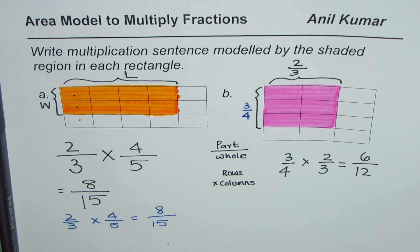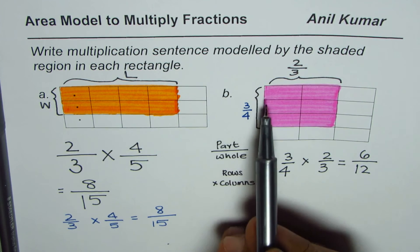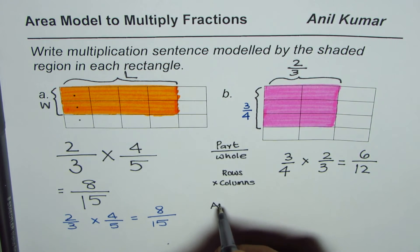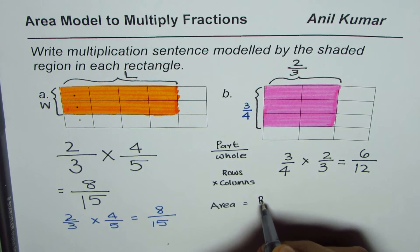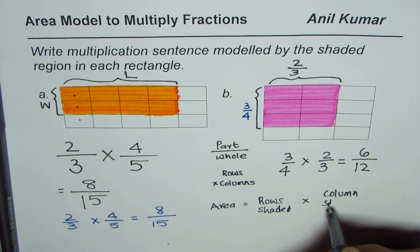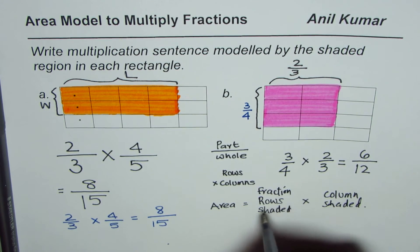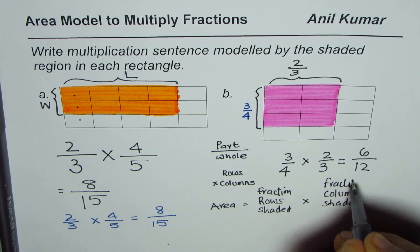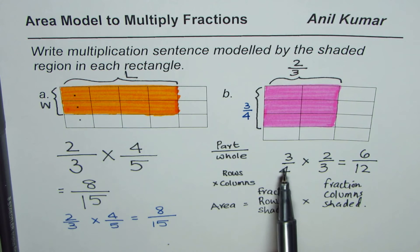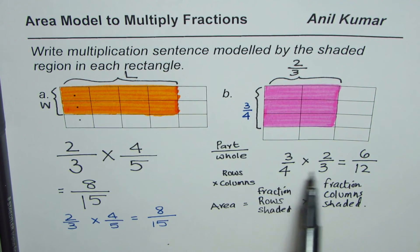So 6/12 is the multiplication sentence modeling the shaded region of the second rectangle. To summarize: fractions are part of whole, and area is rows times columns. Write each side as a fraction — part over whole — then multiply them to get the area. Area equals fraction of rows shaded times fraction of columns shaded. The sentence is written as a product of the two fractions, equal to the product of numerators divided by the product of denominators.